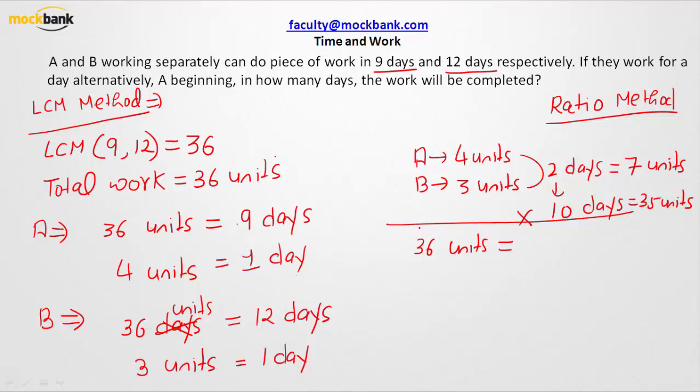In these 10 days, A has worked for 5 days and B has also worked for 5 days. A must have done work on 1st day, 3rd day, 5th day, 7th day, and 9th day. B started work on 2nd, then 4th, then 6th, then 8th, and then 10th. Now who is going to come next? A is going to come next.